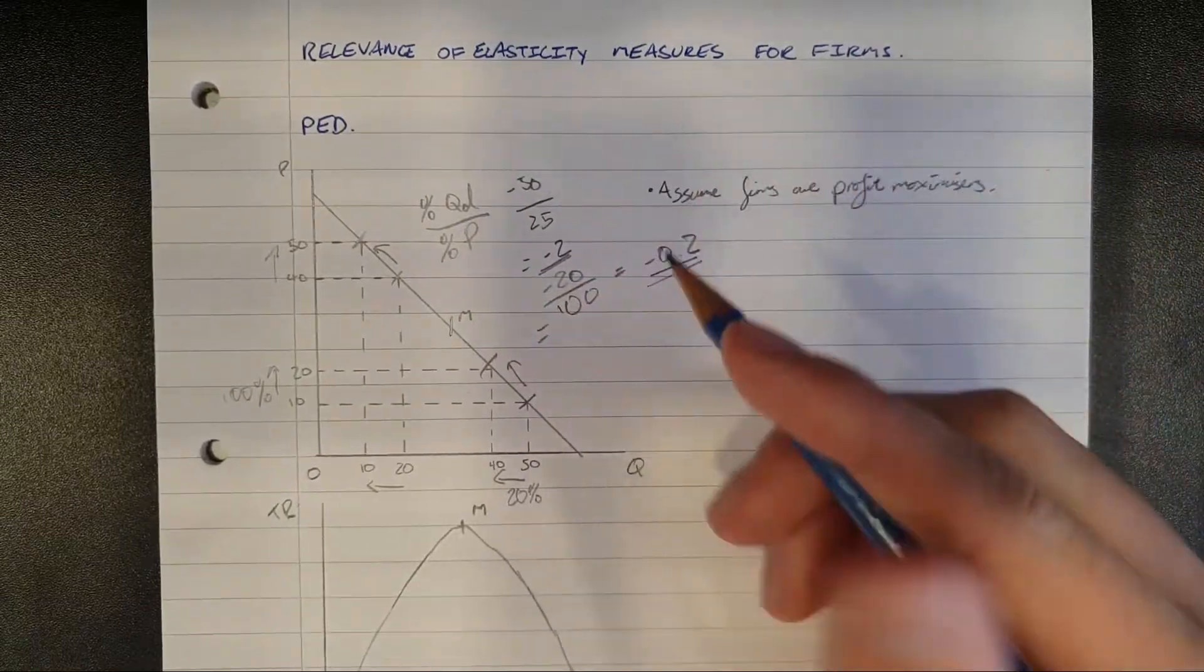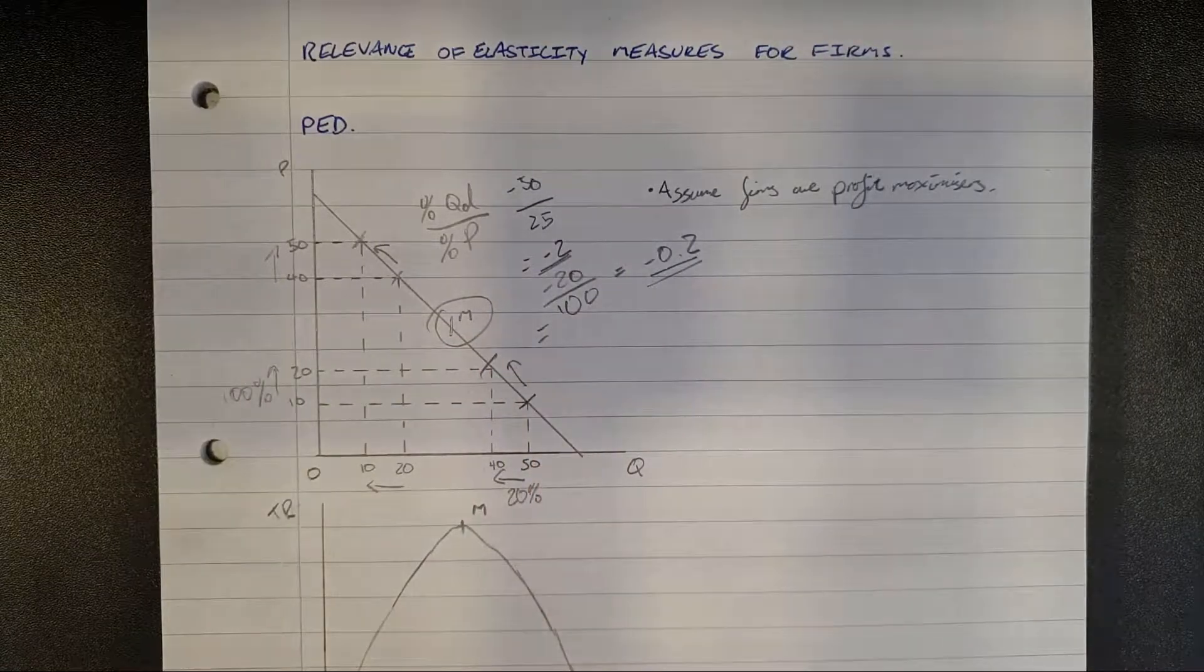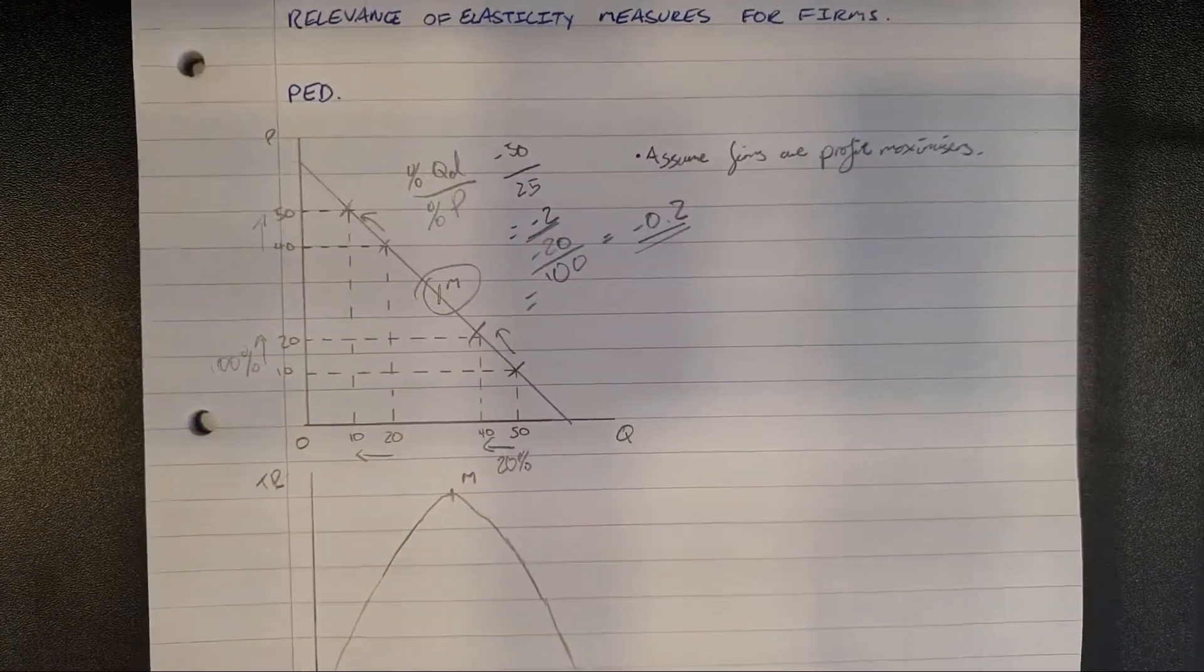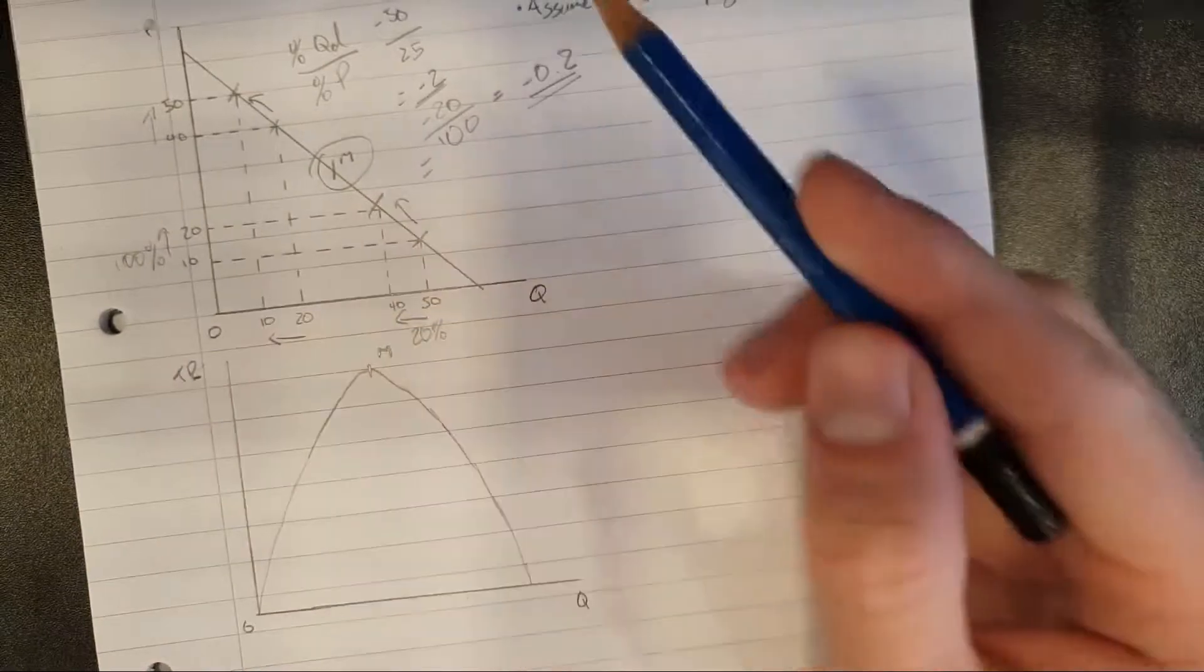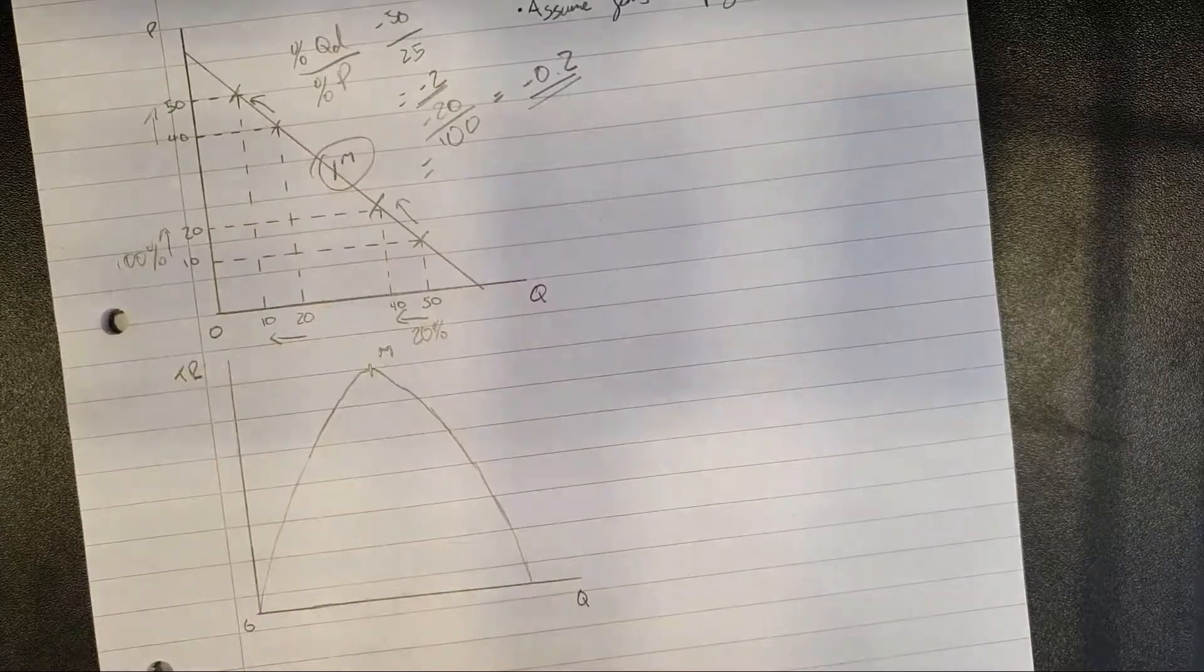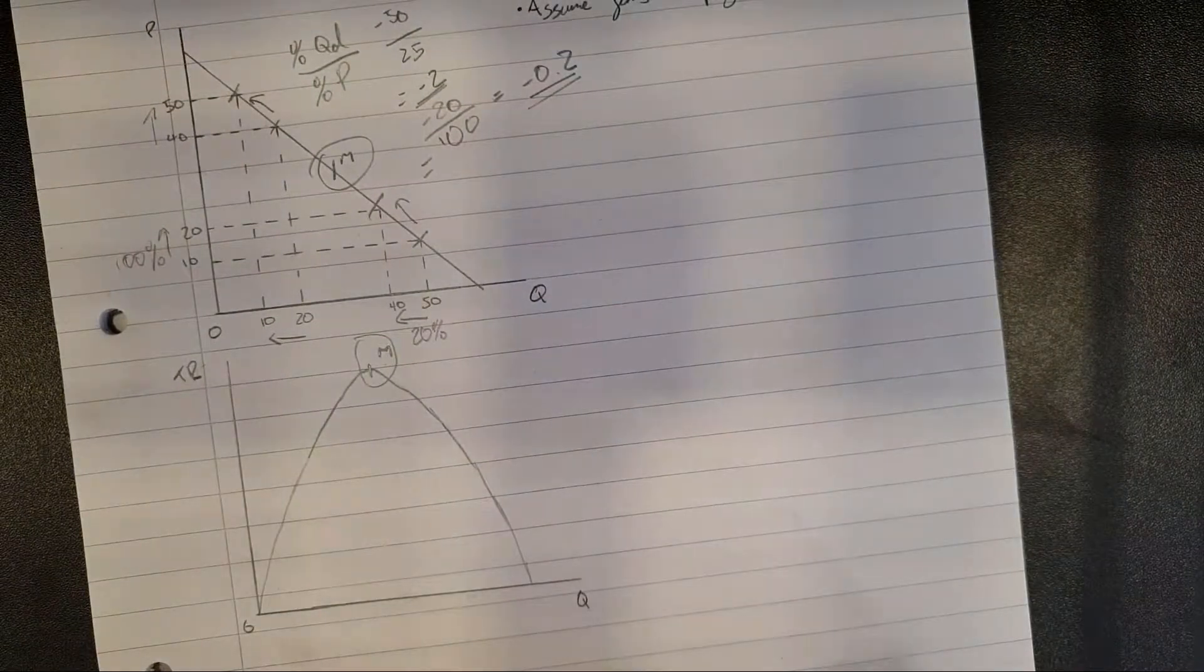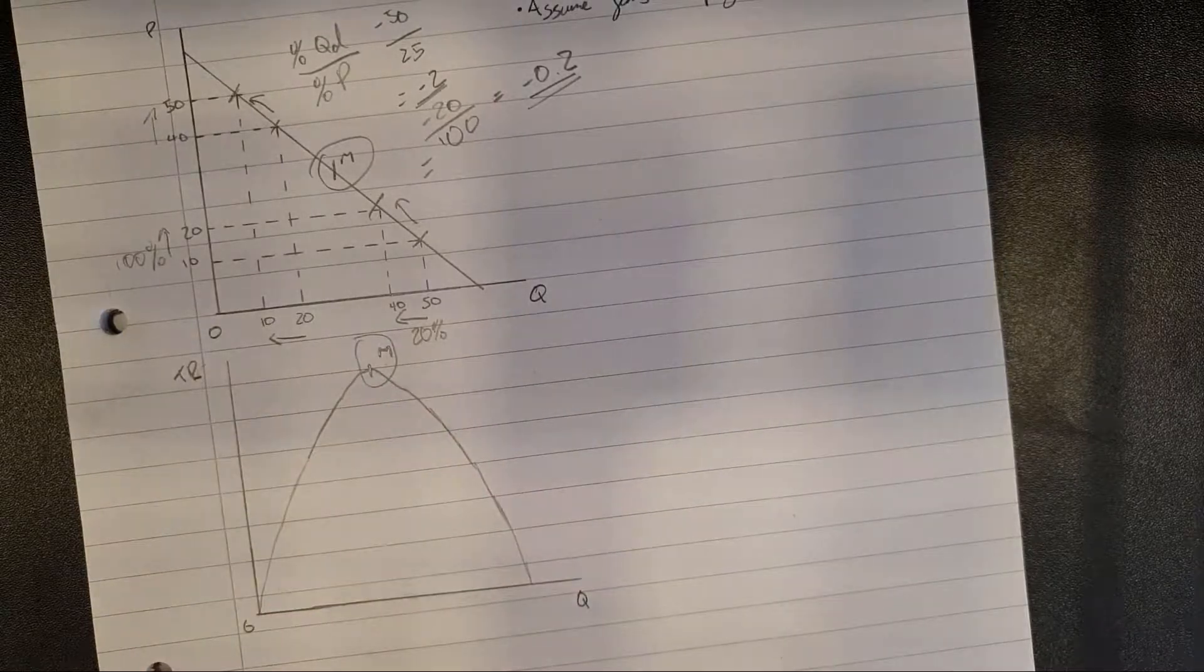And essentially, what firms that are profit maximizers need to do is maximize their total revenue, and they can use this to do so. If we have a curve under here, here's a second graph, and I've quite deliberately lined up the midpoints here. This shows total revenue for a demand curve such as this. Now total revenue is obviously price times quantity, but you can see that it's actually the most at the midpoint. So what firms should aim to do is get as close to the midpoint as possible.